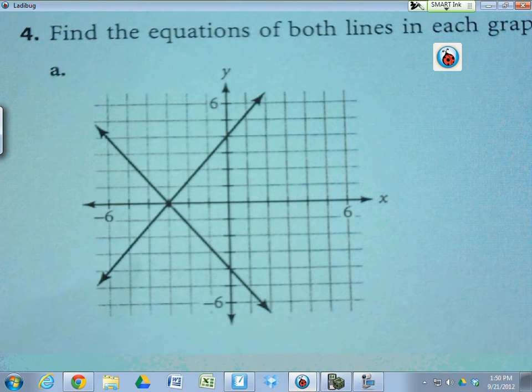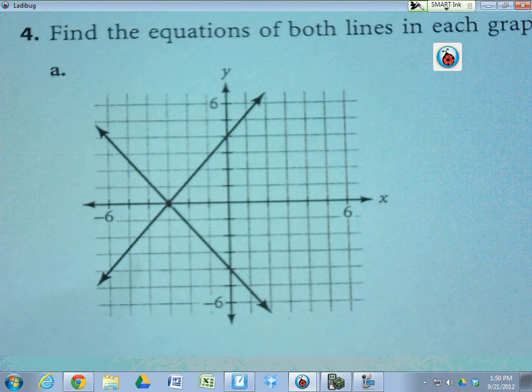4A on the 3.2 green sheet. They want us to find the equations of both of these lines.